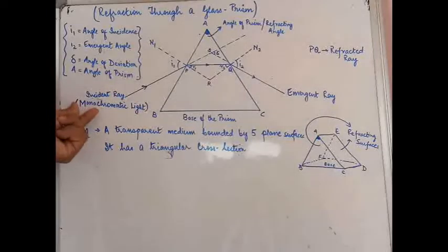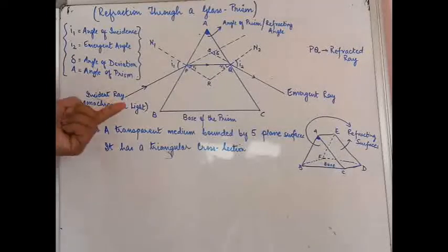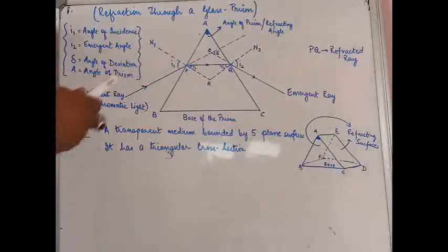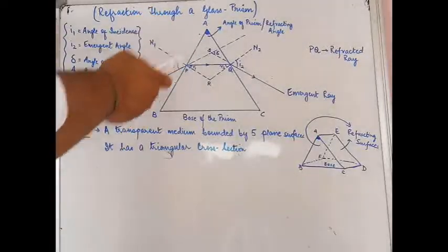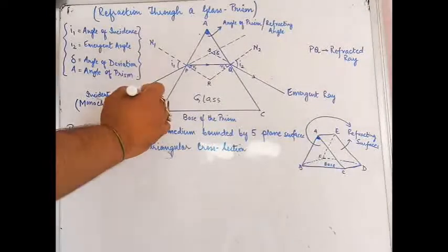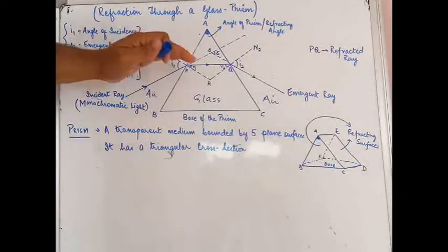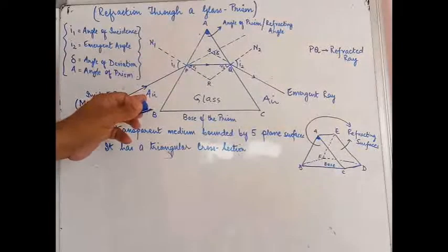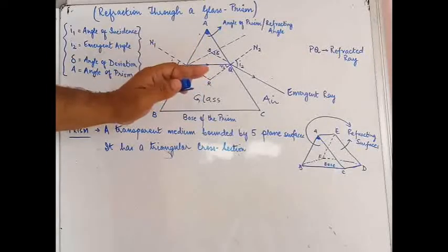This is a monochromatic ray of light — mono means single and chroma means color — because different colored lights have different refraction angles when going through a particular medium. So we are taking the case of a single-colored or monochromatic incident light. This is the air medium in which it is traveling. Once it falls on the first surface AB of the prism — which is made of glass — the ray goes from air (rarer medium) into glass (optically denser medium), and whenever a ray goes from rarer to denser, it bends towards the normal.